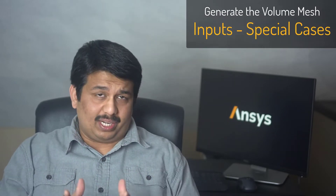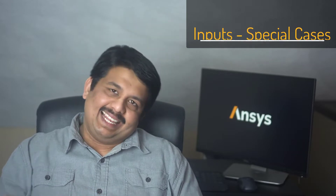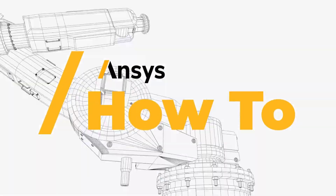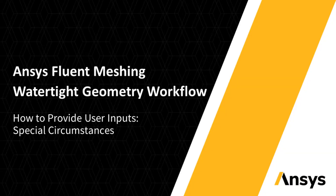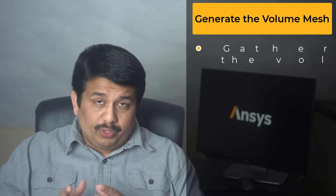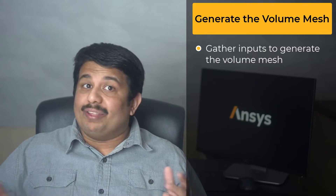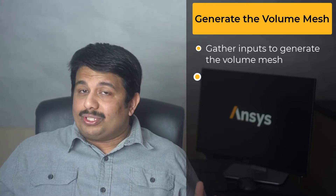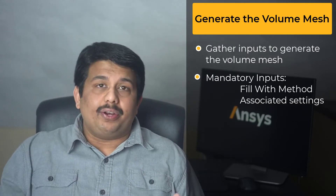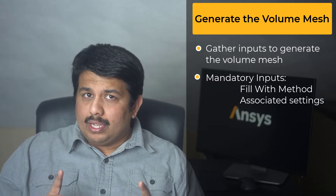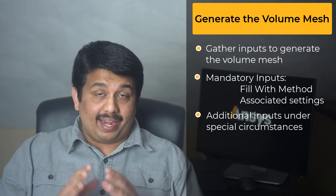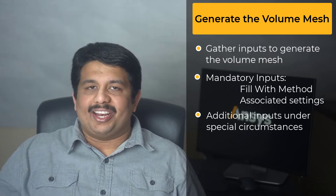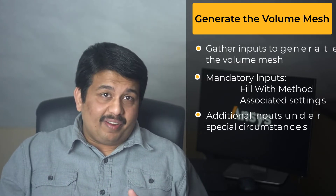Hello and welcome. The focus of this video is on exploring additional input options that appear in the Generate the Volume Mesh task in the ANSYS Fluent Meshing Watertight Geometry Workflow under special circumstances. The purpose of this task is to gather input from the user and inform the Fluent Meshing algorithm on how to create the Volume Mesh for the computational model. Inputs regarding the Volume Fill Method and their settings are mandatory under all situations. However, under special circumstances, additional inputs are required for the algorithm to successfully generate the Volume Mesh. Let us now identify and understand these unique cases.